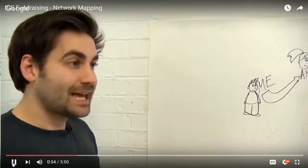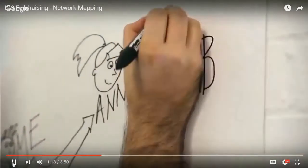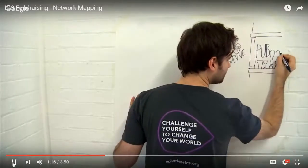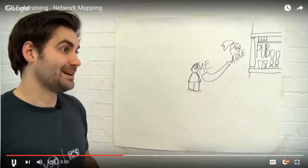Then think about the ways they might be able to help with your fundraising. Would they come along to an event? Would they help you organize one? Do they have any special skills or talents — maybe they're an artist or a performer? Maybe they work somewhere useful. For example, I've chosen my friend Anne who works in a pub, so I'm going to talk to Anne about running a pub quiz. I also think Anne would donate towards my sponsored activities, so I'll pop both of those things down.